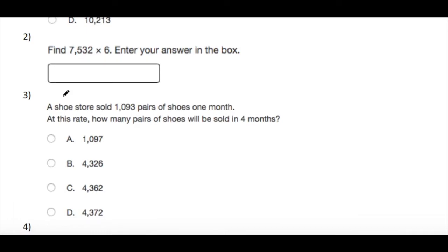Second question: find 7,532 times 6. Enter your answer in the box. By the same way, I will write 7,532 multiplied by 6. 6 times 2 equals 12, write 2 and carry up 1. 6 times 3 equals 18, and we have 1, so to be 19, write 9 and carry up 1. 6 times 5 equals 30 plus 1, so to be 31, write 1 and carry up 3. And 6 times 7 equals 42, and we have 3, so it will be 45. So the answer will be 45,192.